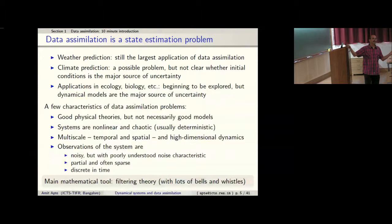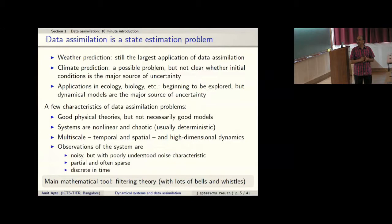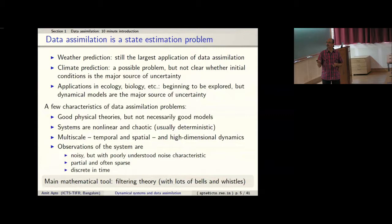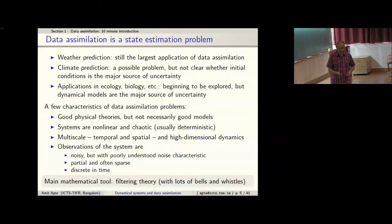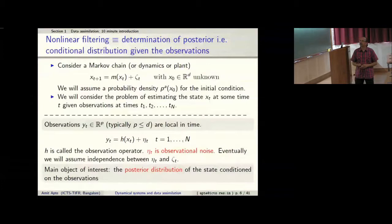Observations are discrete in time — the time scale of the atmosphere could be minutes to hours, and observations are available once every few hours or once a day — unlike engineering systems like chemical plants where continuous-time observations at several hertz is a good approximation. The main mathematical tool is filtering theory, with many bells and whistles specific to high-dimensional, multi-scale, chaotic problems with sparse observations.